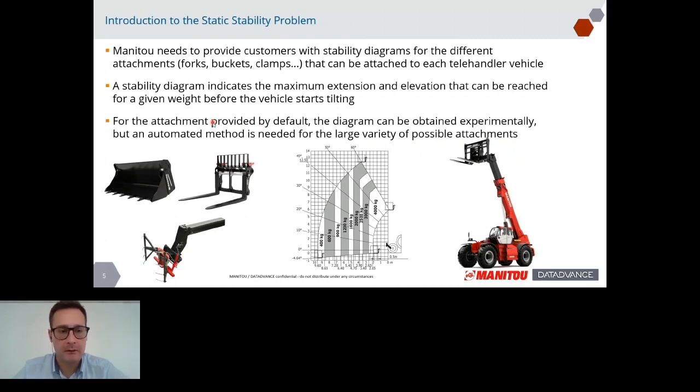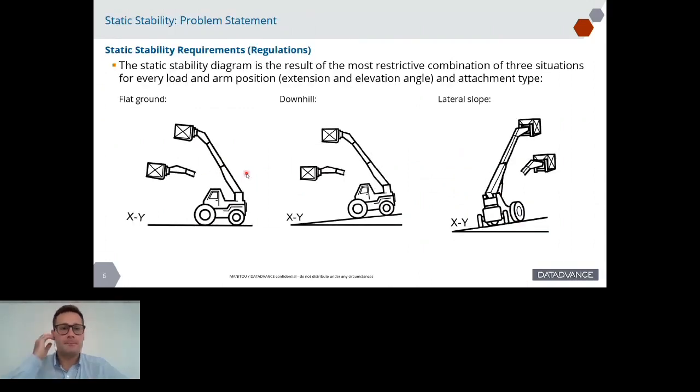You can wonder how is this limited by the height. Simply, for example, when the vehicle is in a sideways position with lateral inclination, height is also a limiting factor for this type of loads. The problem that Manitou has in this regard is that for the default attachment, for example here it's a fork, they can produce this diagram experimentally by testing the setup in the limit position.